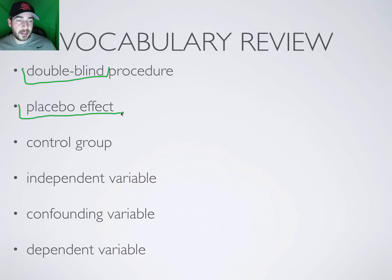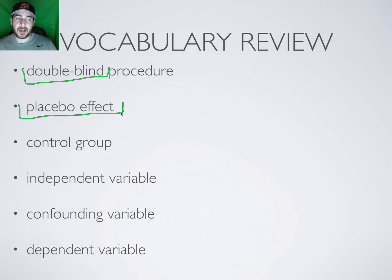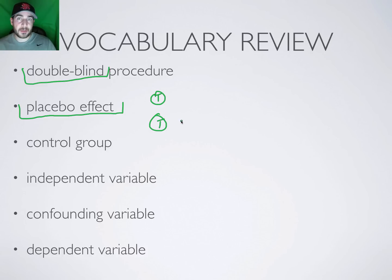Placebo effect is when a participant receives an actual benefit from a drug purely because they believe it's going to work — because the researcher or doctor told them it would work. This is a very powerful effect: your brain thinks it's going to work, so it works. Sugar pills and the real drug are made to look, feel, and taste identical so participants can't tell the difference.